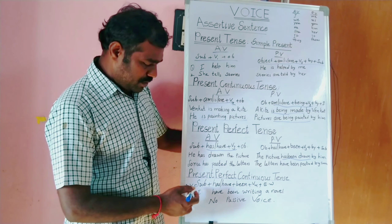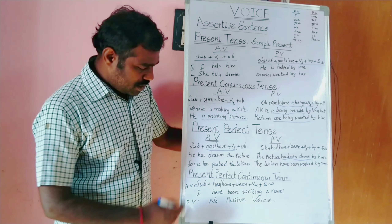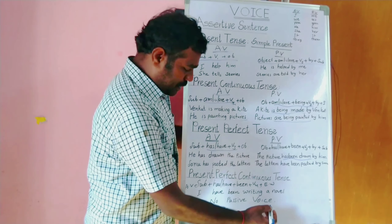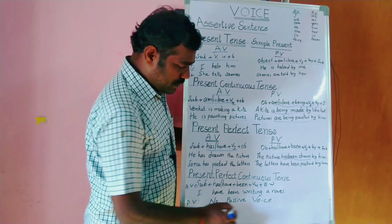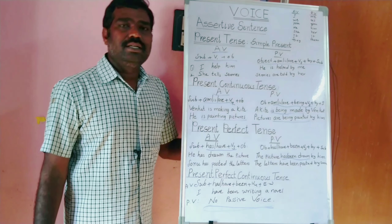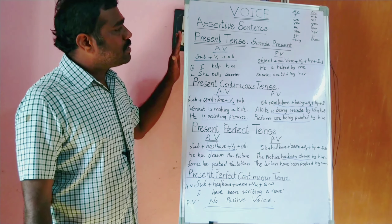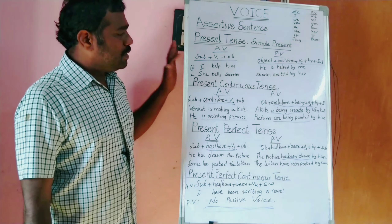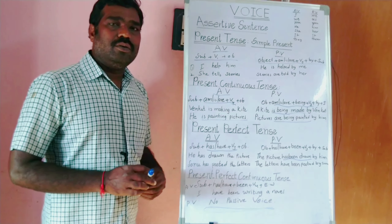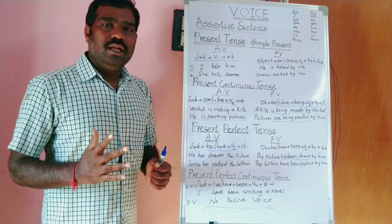Then present perfect continuous tense. If you see the structure: subject + has/have + been + V4. For example: 'I have been writing a novel.' Ie vidanga manu, present perfect continuous tense ko passivize laiyadhu — it cannot be changed to passive voice.